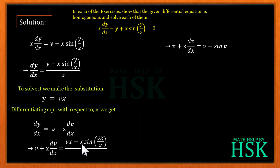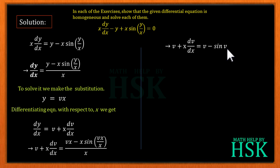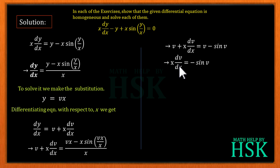In the next step, x cancels from the right-hand side, giving v + x·dv/dx = v minus sin(v). The two v terms cancel, so we obtain x·dv/dx = minus sin(v).